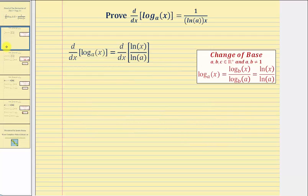So the first step of our proof is going to be to write log base a of x as a quotient of two logs using the change of base formula given here on the right. So we can say the derivative of log base a of x with respect to x is equal to the derivative of natural log x divided by natural log a with respect to x.